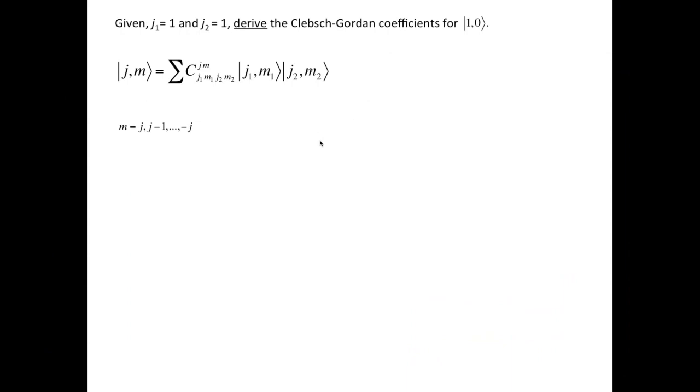In general, for a given value of J, M can take values from J to minus J in steps of 1. Also, for a given pair of J1 and J2, the possible values of J are from J1 plus J2 to the absolute value of J1 minus J2, again in steps of 1.